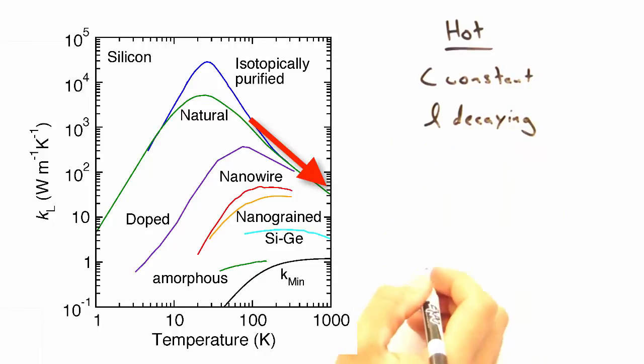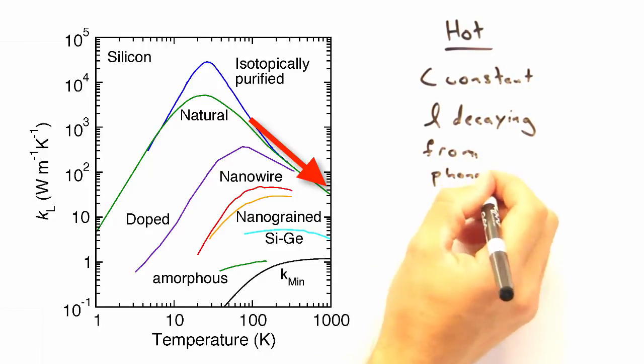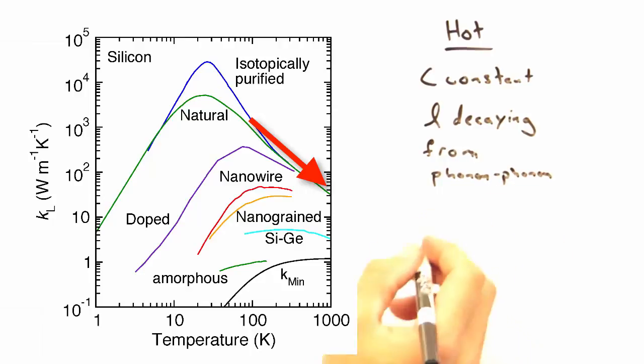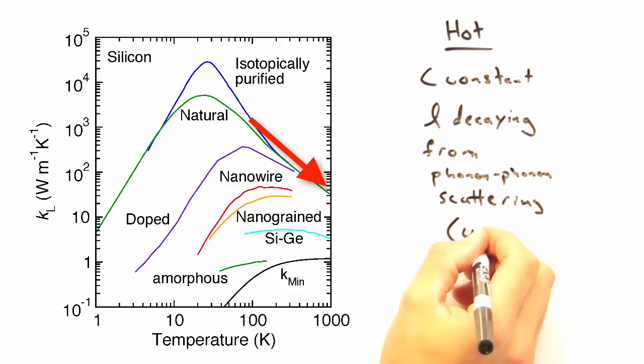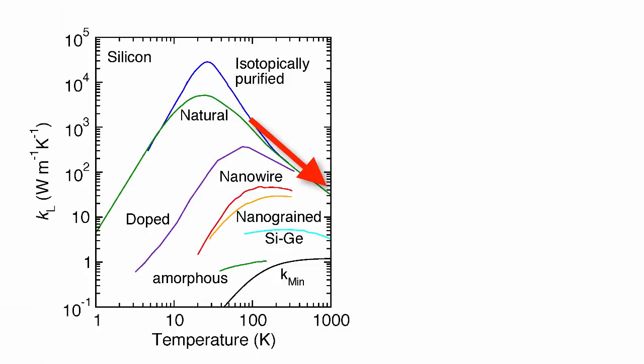And how about the right side? Well, as the temperature starts to go up and up, our heat capacity becomes a constant, but our mean free path has an inverse relationship to temperature. Why? Umklapp scattering, right? Exactly.